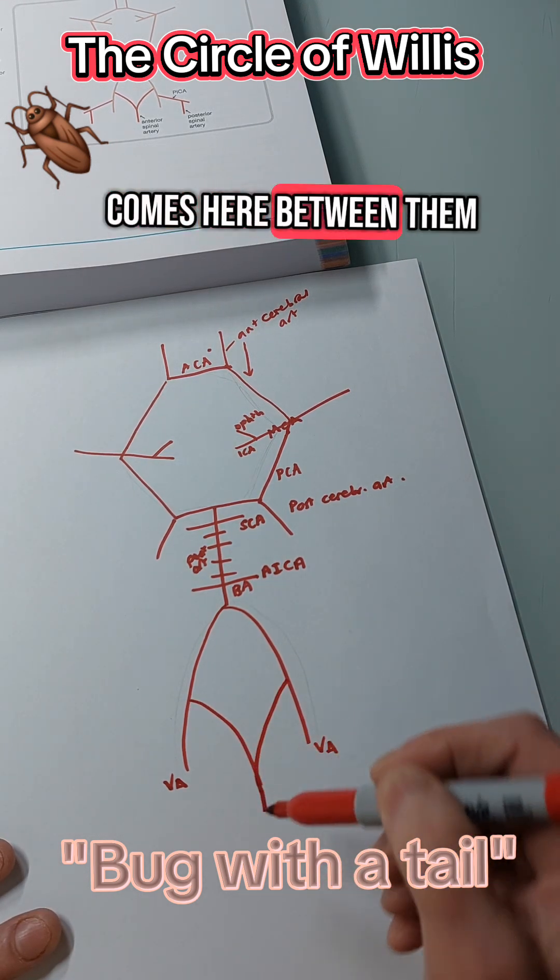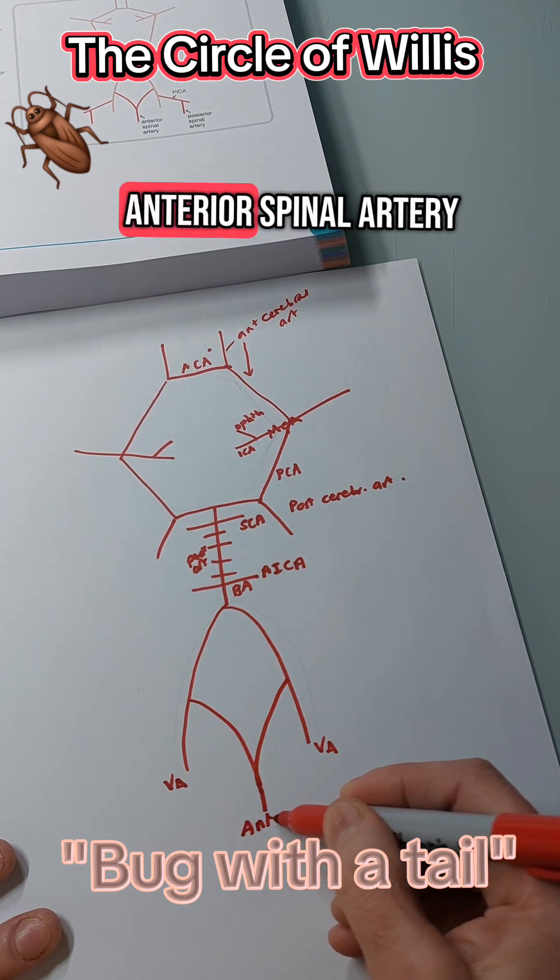So we have a branch that comes here between them, and that's the anterior spinal artery.